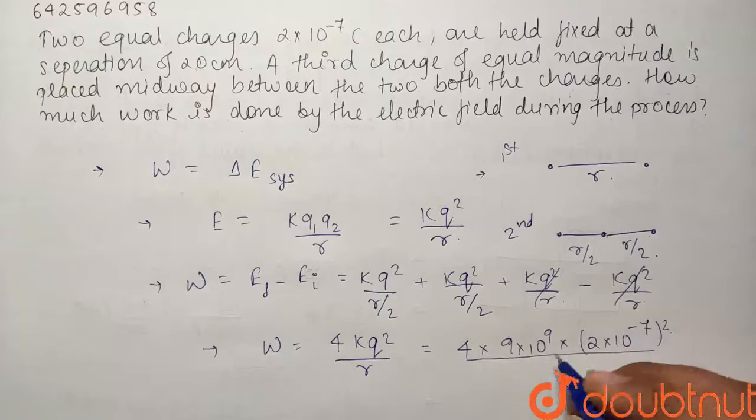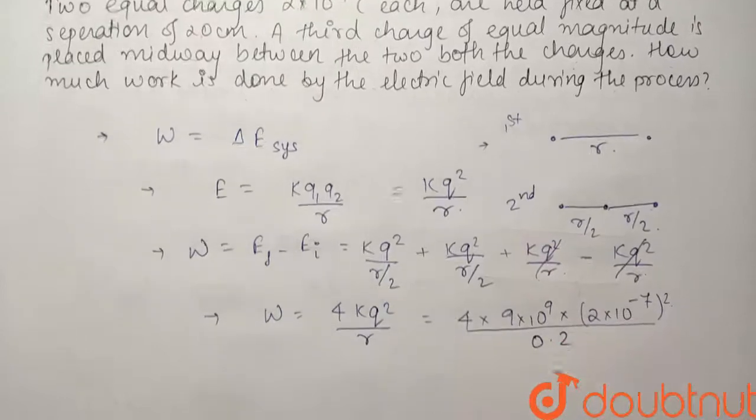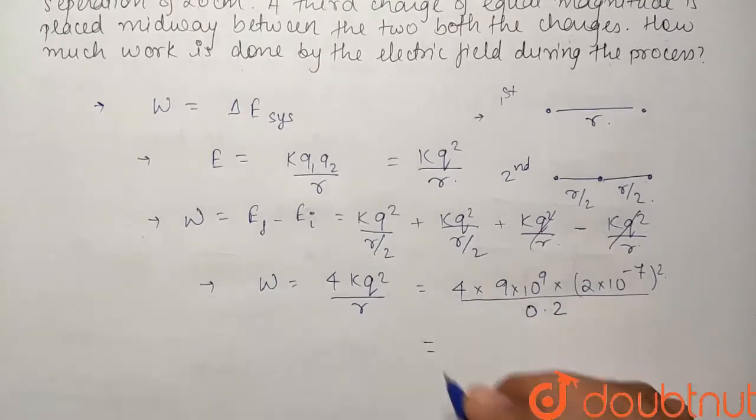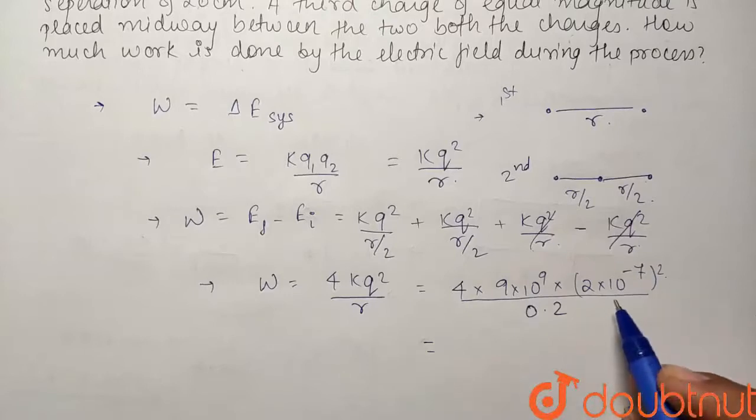Separation R was equals to 20 centimeters. I will convert into SI unit and it will become 0.2 meters. So if I simplify, I get the value to be equals to 4.